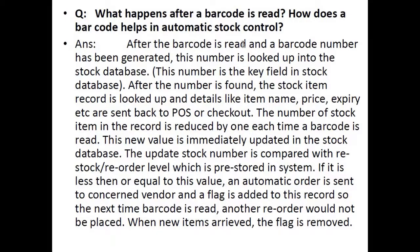How does a barcode help in automatic stock control? After the barcode is read and a number is generated, that number is looked up in the stock database as a key field. The stock item record is found and details like item name, price, and expiry are sent back to the POS or checkout counter. The stock count is reduced by one, and this new value is immediately updated in the database. The updated stock number is compared with a pre-stored restock or reorder level — if it is less than or equal to that value, an automatic order is sent to the vendor and a flag is added to the record. When new items arrive, the flag is removed.